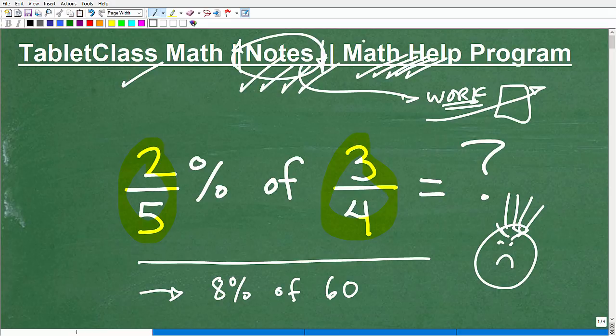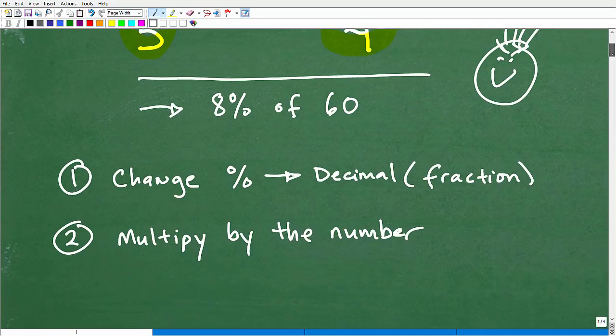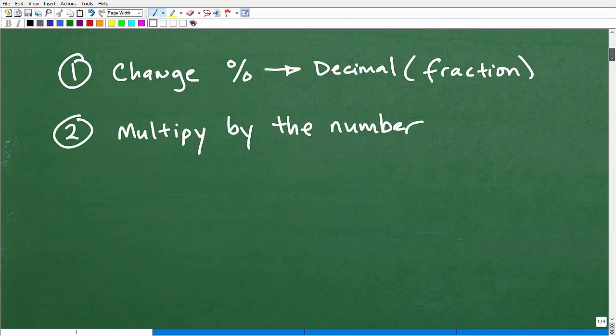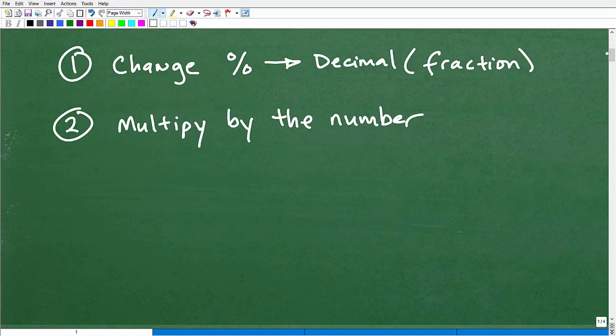All right, let's get into this problem. And by the time we're done, all I want to see is a bunch of happy faces. So let's talk about two approaches to doing this problem. But first, let's just talk about a basic percent problem. So let's say 8% of 60. What do we do here? So I'm trying to find 8% of 60, for example.